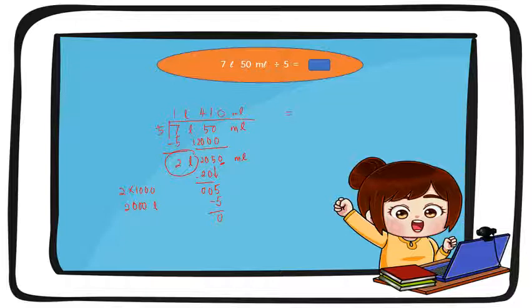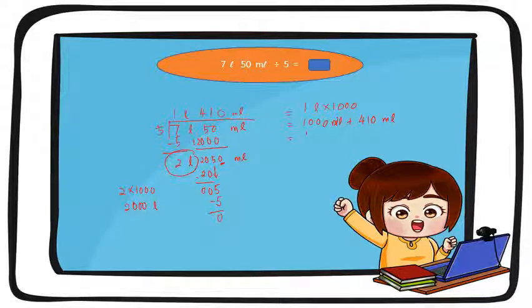Seandainya dia nak jawapan dalam milliliter, sama je step macam gram tadi. Kita darab dengan seribu. So, satu darab seribu, seribu milliliter. Tambahlah dengan empat ratus sepuluh milliliter. Jawapannya, seribu empat ratus sepuluh milliliter.